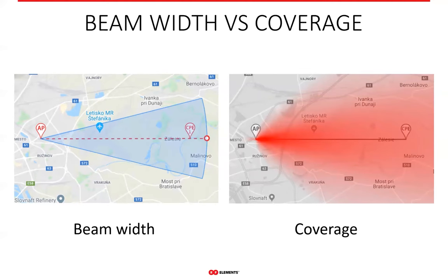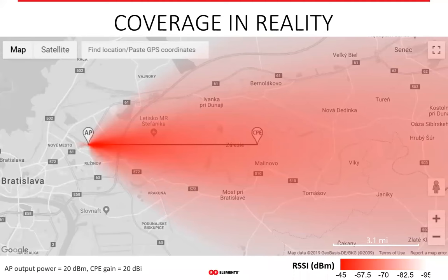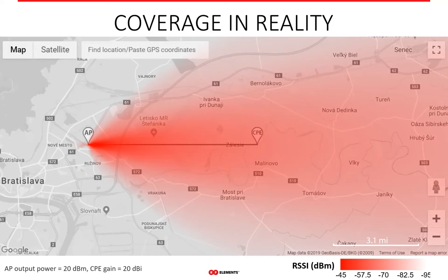These are two images showing the same scenario. The one on the left is an overlay of an antenna beam width on a map — a simple graphical representation of the beam width angle. That blue area is not coverage; it simply shows the section of a circle corresponding to the antenna beam width angle on a map. The image on the right, though, is the closest thing to how coverage would look if electromagnetic waves were visible. The more vibrant the red color is, the stronger the signal gets, and vice versa. The scale in the lower right corner indicates the strongest signal at minus 45 dBm and the weakest at minus 95 dBm.